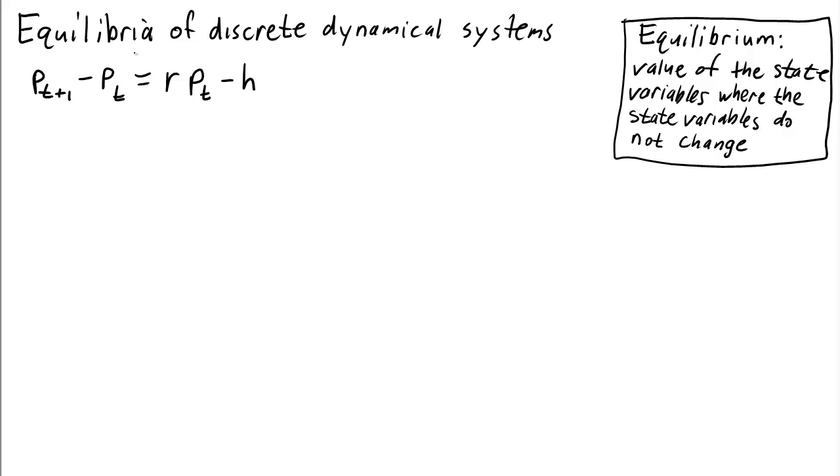So let's look for equilibria of this discrete dynamical system. An equilibrium is the value of the state variables where they don't change.